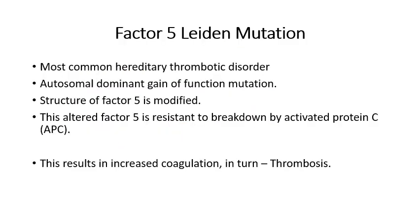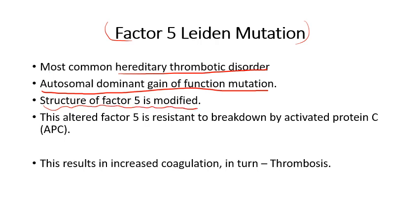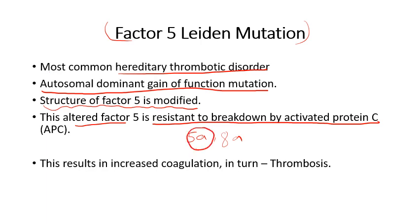Factor 5 Leiden mutation is the most common hereditary thrombotic disorder. It is an autosomal dominant gain-of-function mutation where the structure of factor 5 is altered by substitution of one amino acid, resulting in a modified factor 5 that is resistant to breakdown by activated protein C. Since activated protein C normally inactivates factors 5a and 8a, the failure to break down factor 5a leads to continued coagulation and thrombosis.